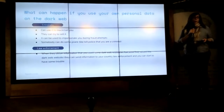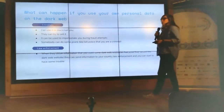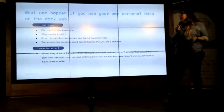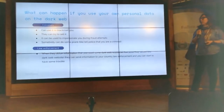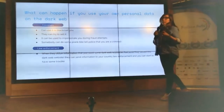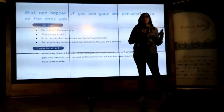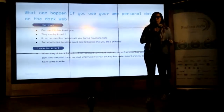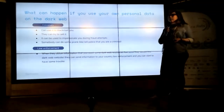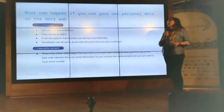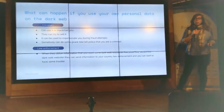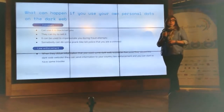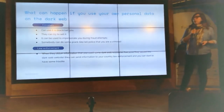What can happen if you expose your personal data on the dark web? Criminals will be able to blackmail you. They can sell this information on the dark web. They can use it to impersonate you and commit fraud. Somebody can actually send to the police screenshots of your personal data from the dark web, and then you will get a not-so-funny call from the police. Also, because it's a place where a lot of criminals stay, there will be law enforcement looking for those criminals — you don't want them to know that you are there either.